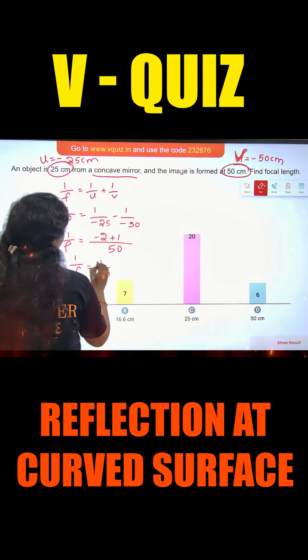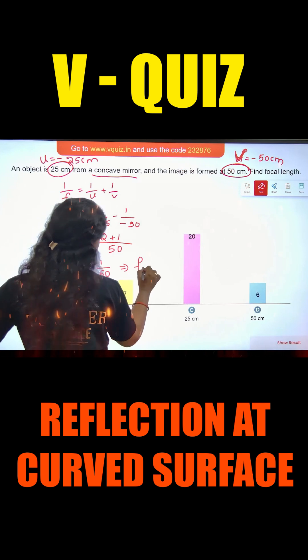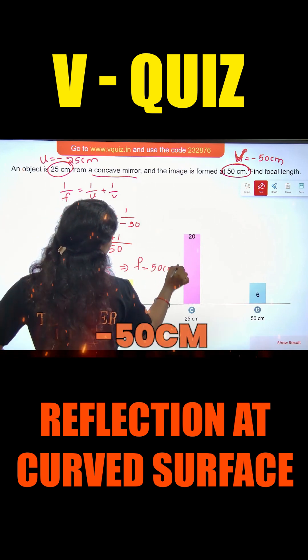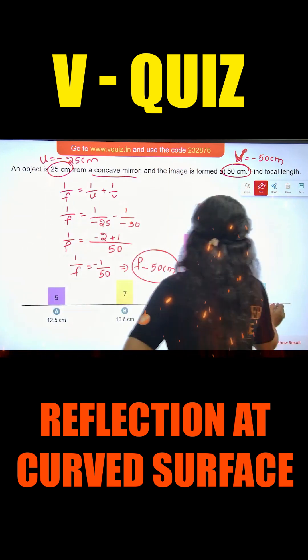1 by 50 minus 1 by 50, so F is equal to minus 50 cm, okay? Option D is the right answer.